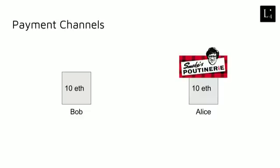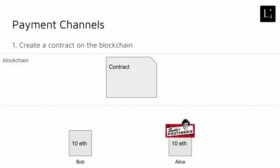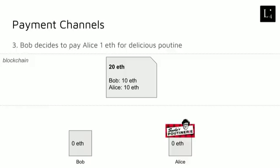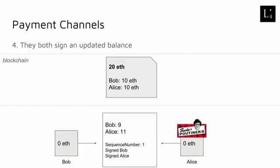Again, we have Bob and Alice, and the first thing they do in this case is to create a special smart contract on the blockchain. Then they put their Ether into the smart contract, and the smart contract records how much money they have put in. Next, Bob decides to pay Alice one ETH. What happens next is that both of them sign this message containing the updated balance — meaning after one ETH is transferred, Bob should have nine remaining Ether and Alice should have a total of 11 Ether. This message is signed off-chain, it doesn't touch the blockchain at all, and it's a cryptographic signature. Once Alice has received this signed message, she can immediately go ahead and provide the poutine to Bob.